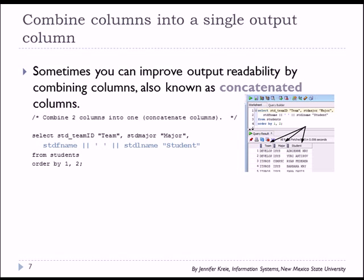When we run that query, we'll see that we have three columns now: team, major, and student. And we've combined the student's first name and last name.